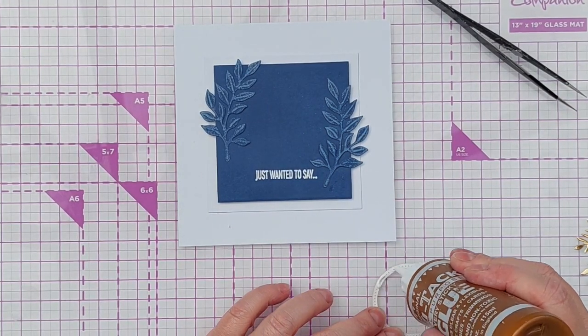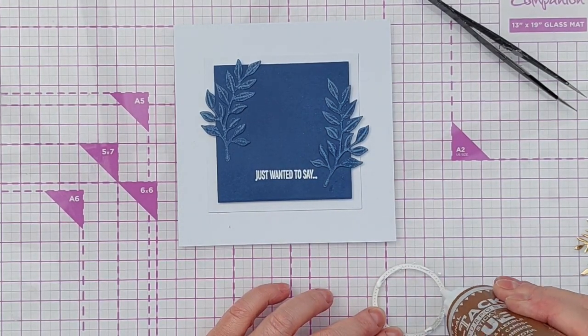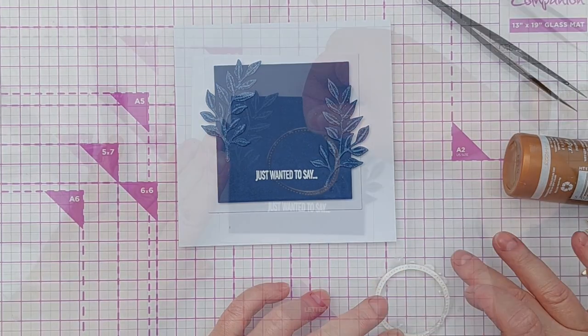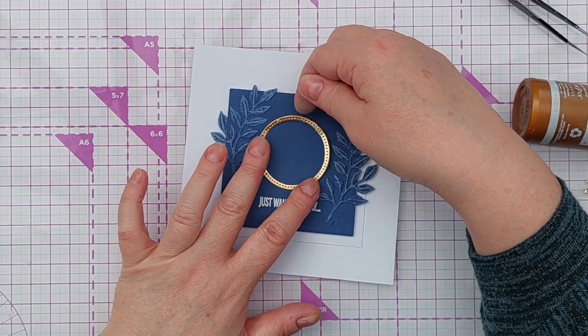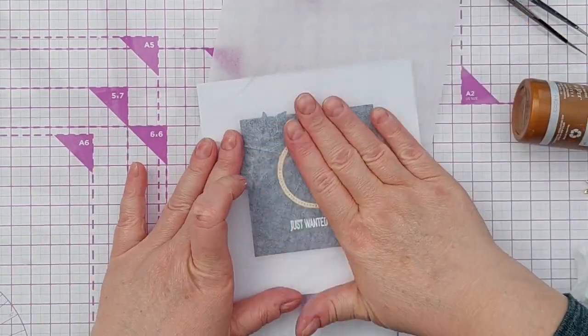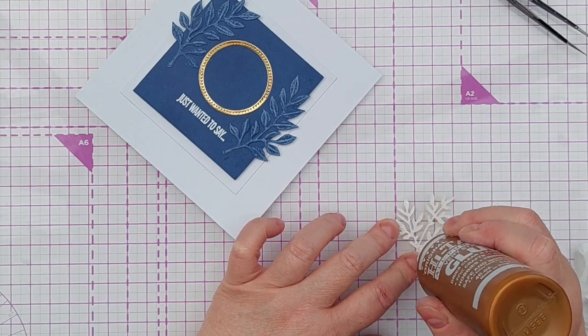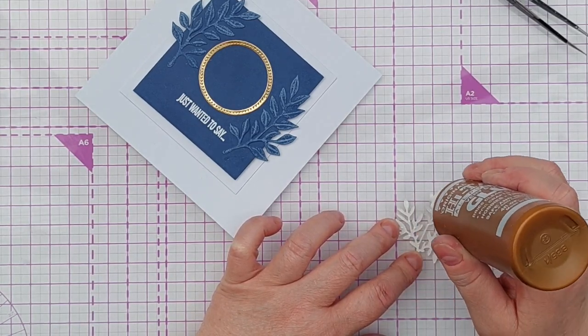And now for the gold. A little bit of glue all the way around the frame. That can go in the middle. And some glue on the back of the gold branch.